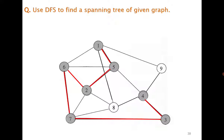From 3 I go to 4. At vertex 4 there are two choices: 8 or 9. I go to 8. Now all neighbors of 8 are exhausted, so from 8 I backtrack to 4 and look for its unexplored neighbor. Vertex 4 has unexplored neighbor 9. Now all vertices have been visited. This gives us the required spanning tree, marked in red.